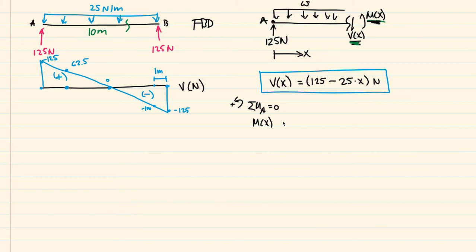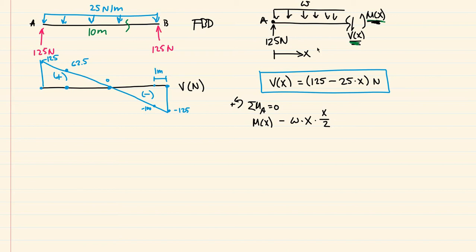The 125 newtons is right at point A, so it won't cause a moment about A, but the distributed load W will — it's going to create a clockwise, so negative, moment. That gives us negative W times x, the distance from A to the cut, times x over 2, which is the moment arm to the centroid of that loading. The shear at the cut is also going to cause a moment about A, giving us minus Vx times the distance x, since that shear is located a distance x from A.